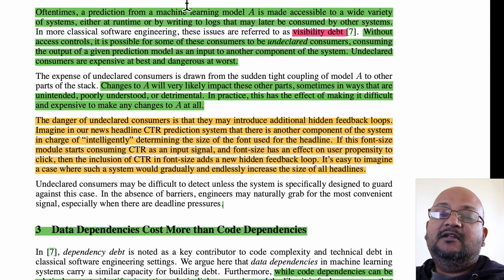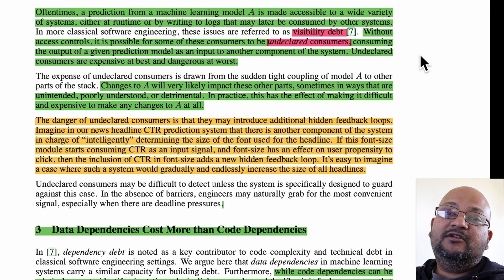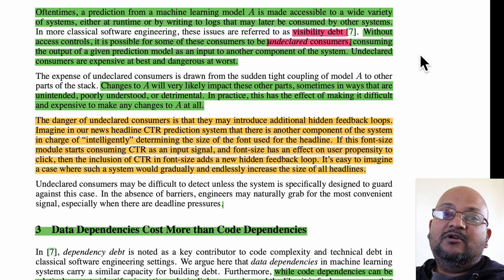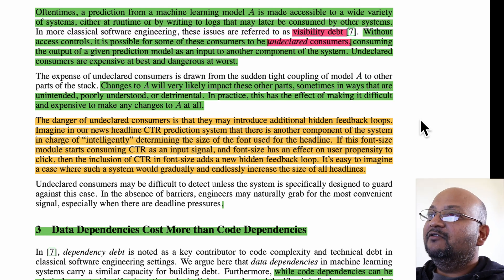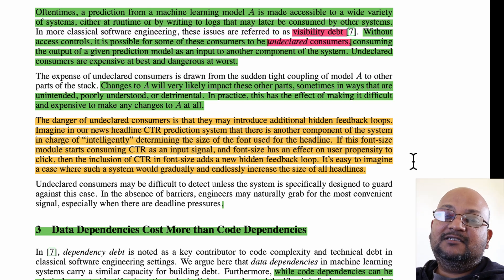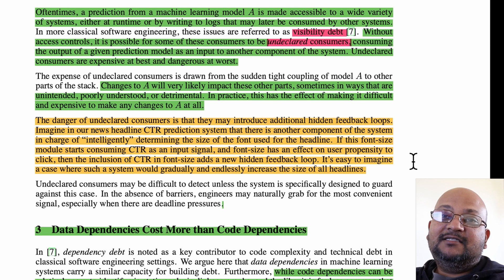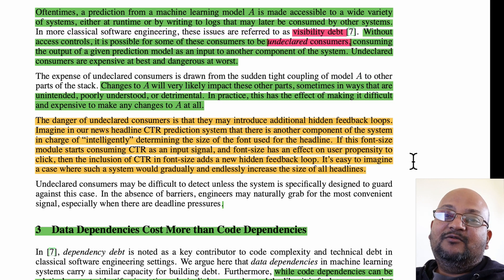The next big problem with large machine learning pipelines is controlling the visibility of your models. It's possible that your pipeline may have consumers that you don't even know about — this is referred to as visibility debt. As more and more downstream systems depend on your model, it becomes harder to make changes without breaking your consumers. For example, imagine a CTR prediction system consumed by another system that tweaks font size of headlines. This creates a feedback loop where changing font size might change CTR, potentially causing a runaway effect where the system just determines that increasing font size will increase CTR.